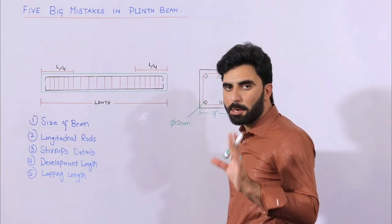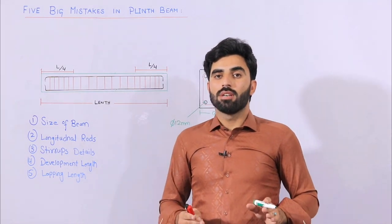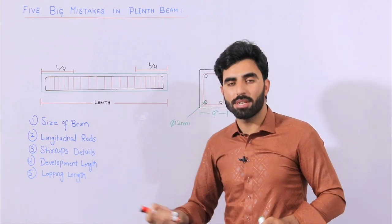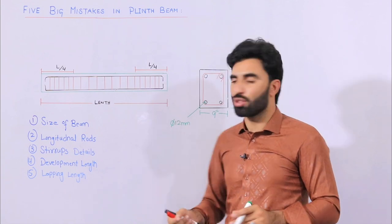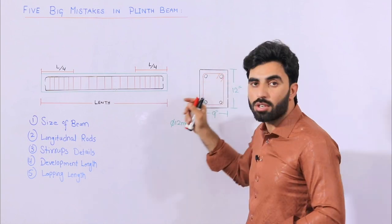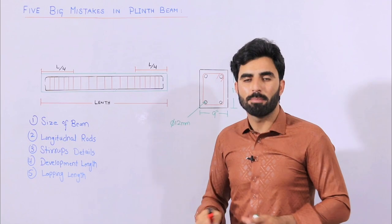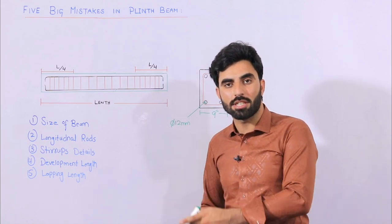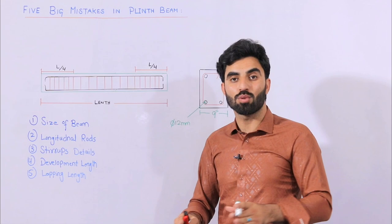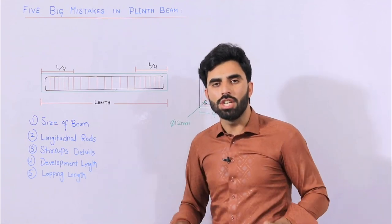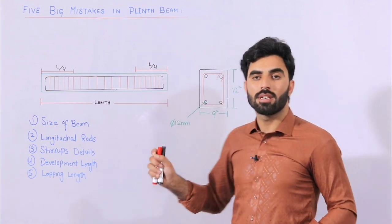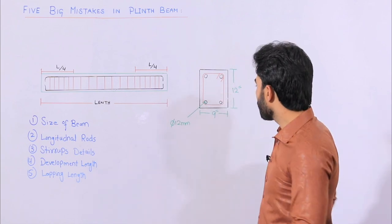Remember that concrete is weak in tension but strong in compression. Therefore you should use maximum numbers of bars at the bottom, because the bottom is the tension zone. Use maximum numbers in the tension zone compared to the compression zone. If you are using two steel rods at the top, use minimum three steel rods at the bottom. People are using the same number at top and bottom — two and two, or three and three, or four and four — which is the wrong design. Use maximum numbers at the bottom (tension zone) and minimum numbers at the top (compression zone).